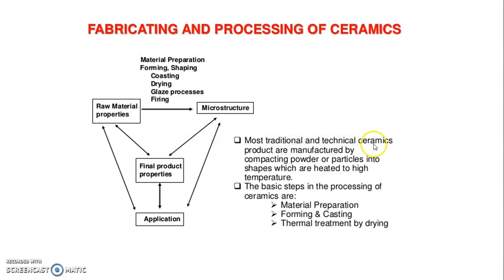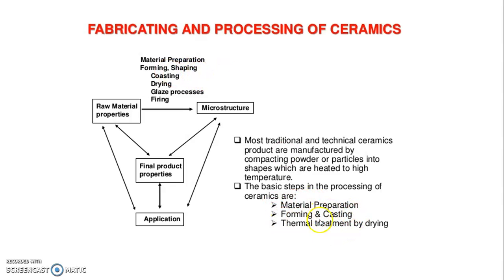Most traditional and technical ceramics products are manufactured by compacting powder and particles into shapes, which are then heated to high temperatures. The basic steps of ceramic processing are: material preparation, forming or shaping, and casting. Casting is a shaping process, sometimes followed by manual treatment through the drying process.